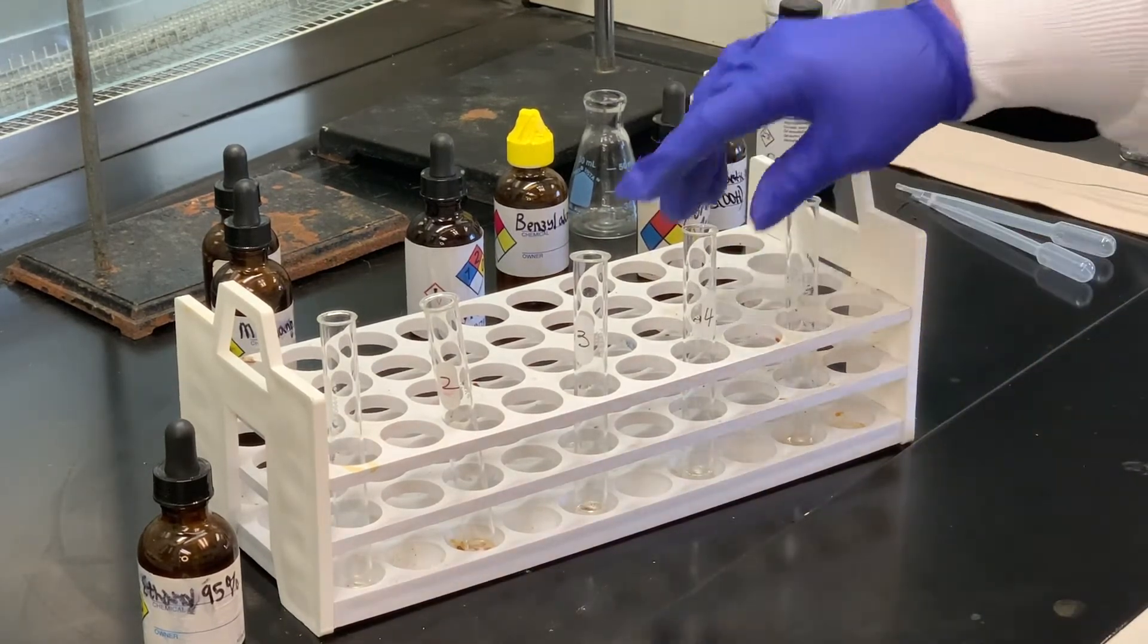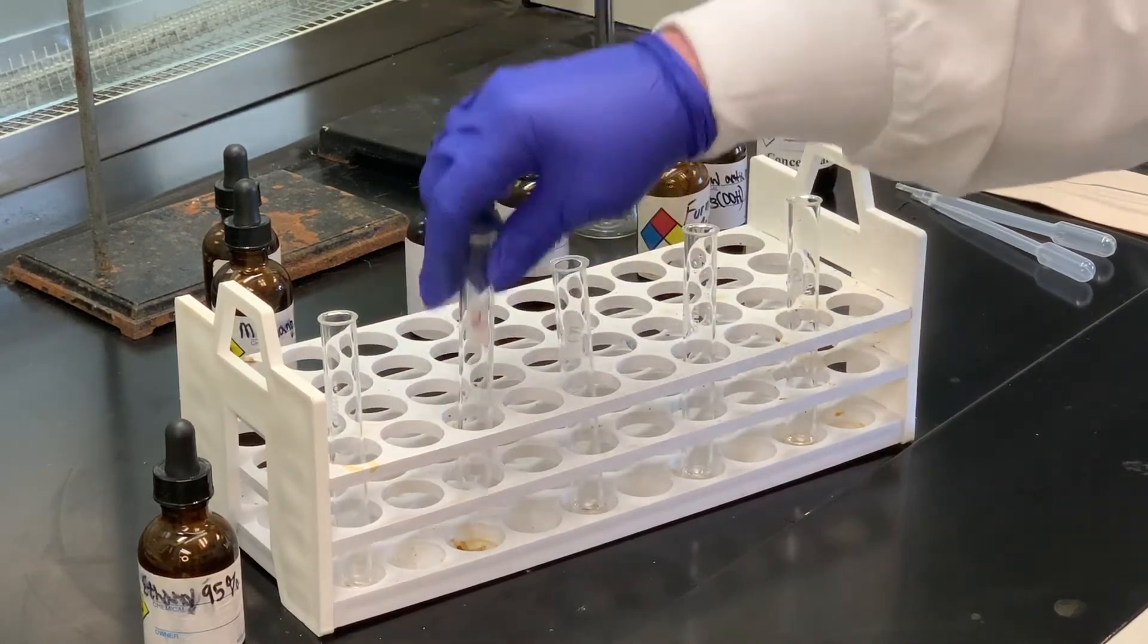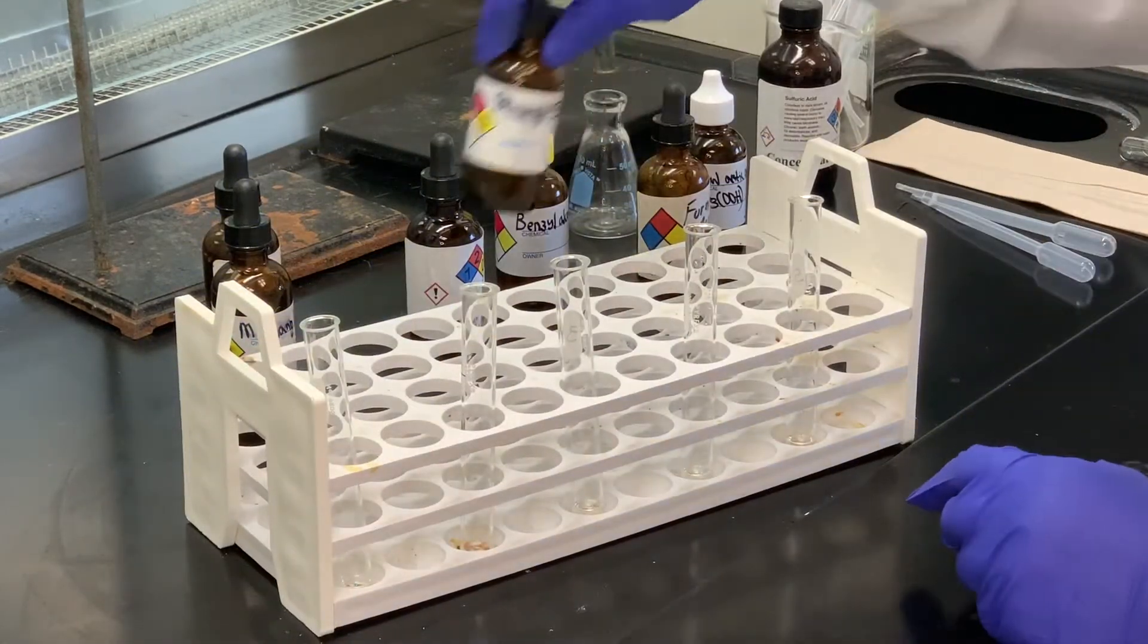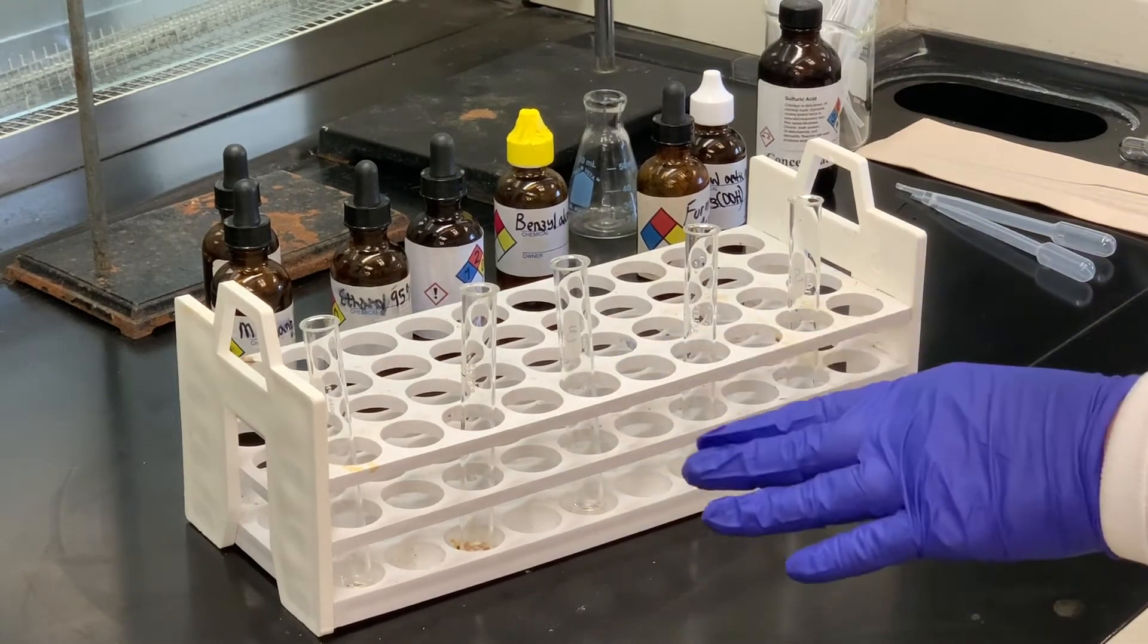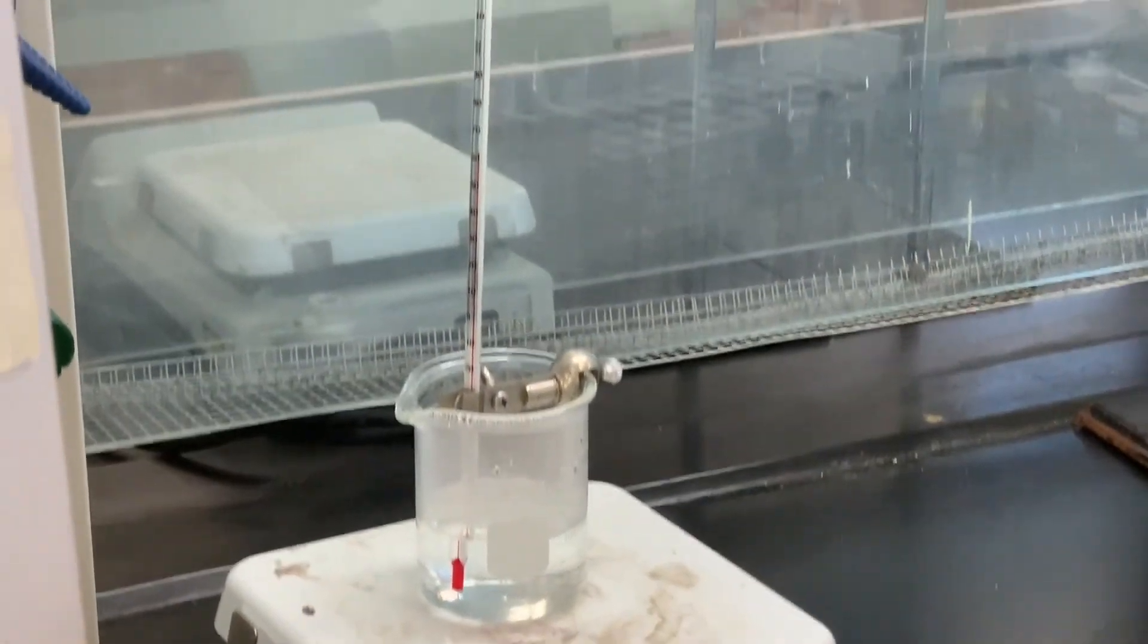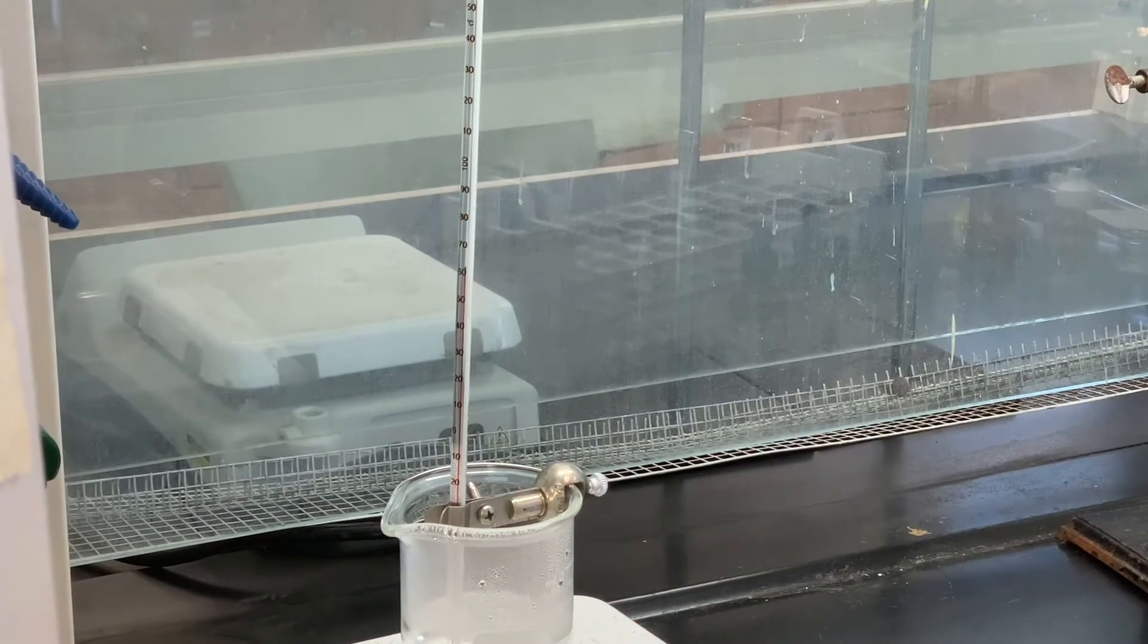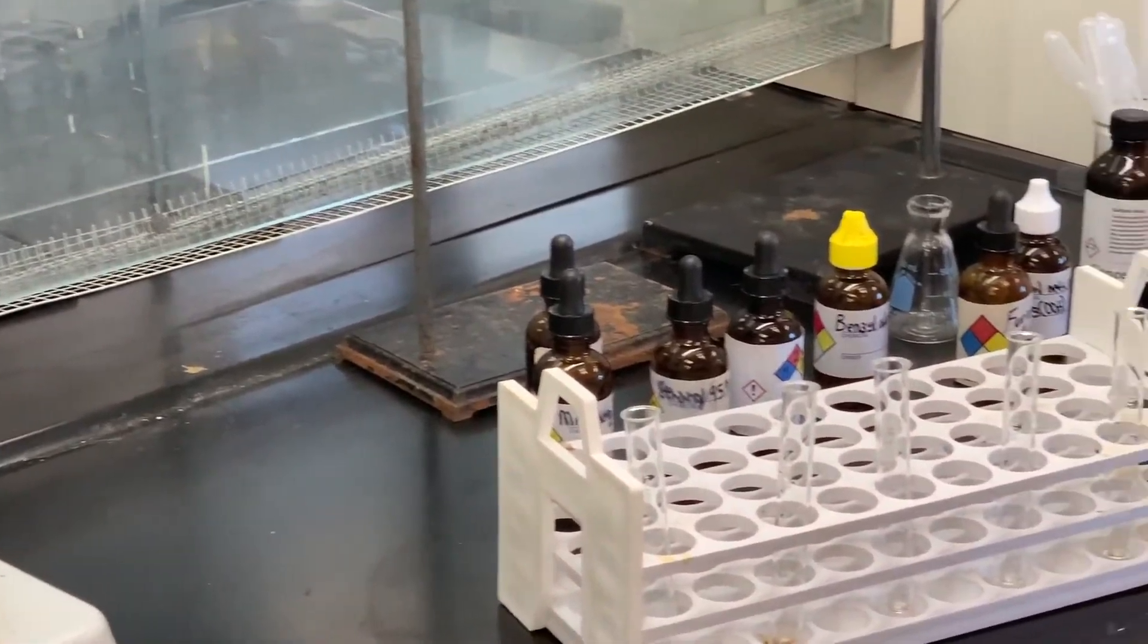Now when you mix an alcohol and a carboxylic acid together, nothing's really going to happen until you add an acid catalyst. So our acid catalyst is sulfuric acid. So what I need to do is to add 5 drops of sulfuric acid to each of these test tubes. Once that's done, we're going to place it in a hot water bath or warm water bath where the temperature is around 60, 65 degrees. And then we will let them sit in there for about 10 minutes. And then we'll take those out and see if we can notice a certain smell associated with those.